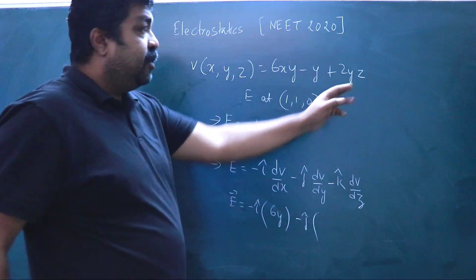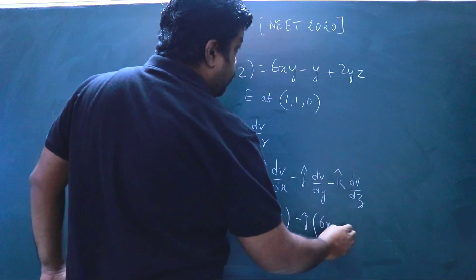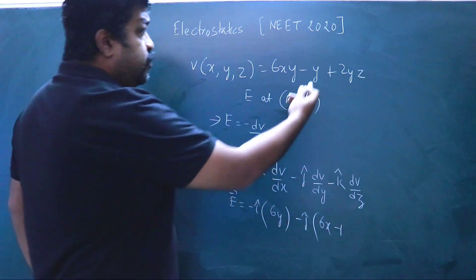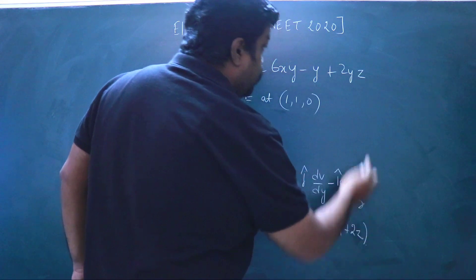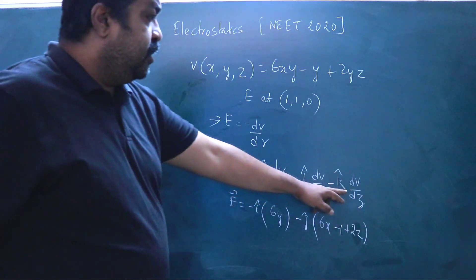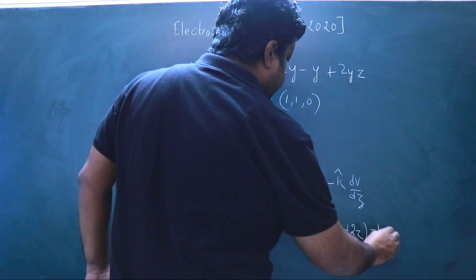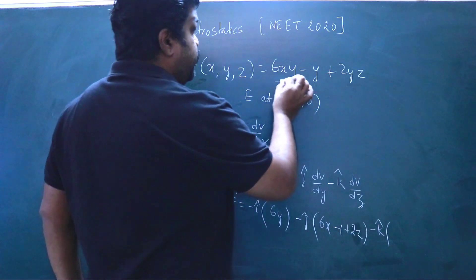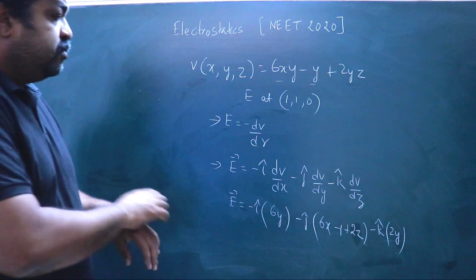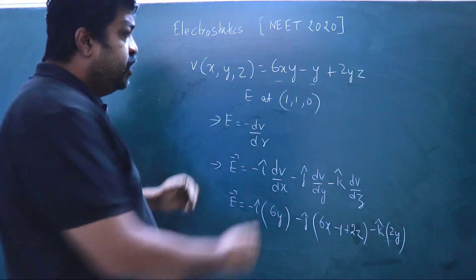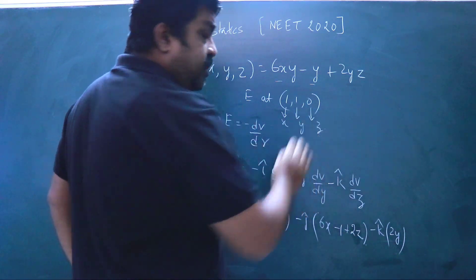Differentiating with respect to y: ∂V/∂y = 6x − 1 + 2z. Differentiating with respect to z: the first two terms vanish, giving ∂V/∂z = 2y. So E = −î(6y) − ĵ(6x − 1 + 2z) − k̂(2y). Now we substitute the point (1, 1, 0), where x = 1, y = 1, z = 0.